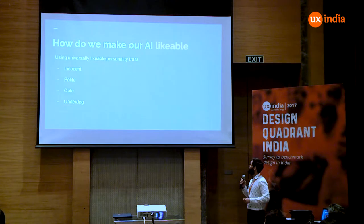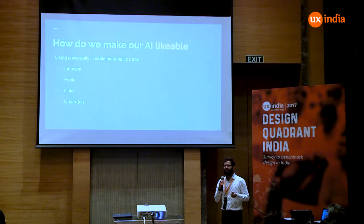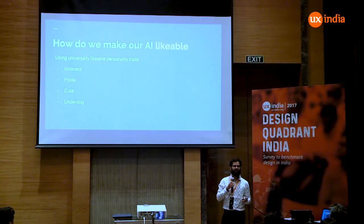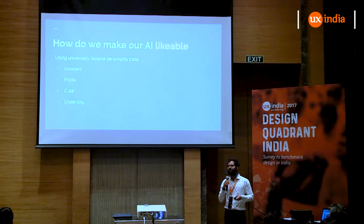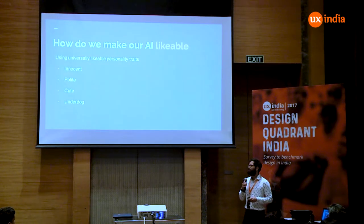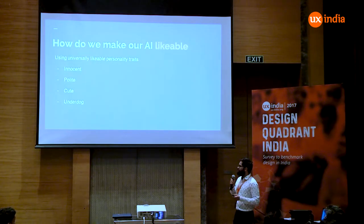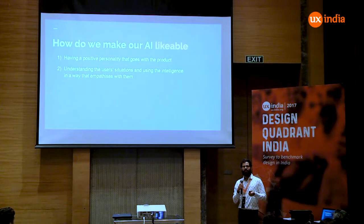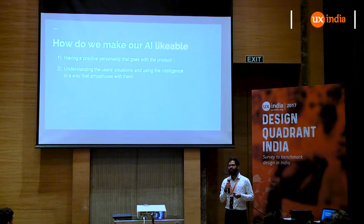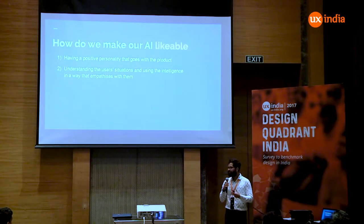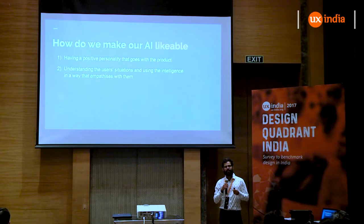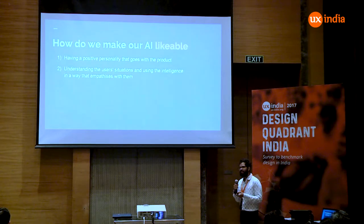All these things came together and we thought: what is the process we should use to make our product like a likable person? There were two approaches. The first approach is to give the product universally likable traits — make it cute, make it an underdog with innocent attributes — but that only works for certain kinds of products. The other path is to give the product a positive personality that goes with the product. If it's an online learning environment, the users don't expect it to be cute. We need to understand the user's situations and give empathy to the artificial intelligence so that it treats each situation with empathy.